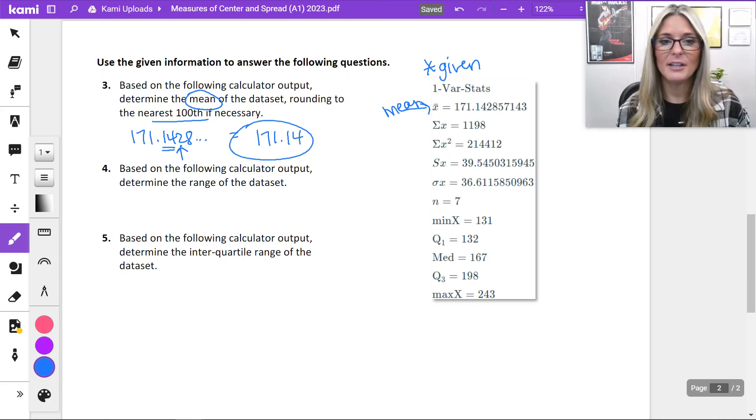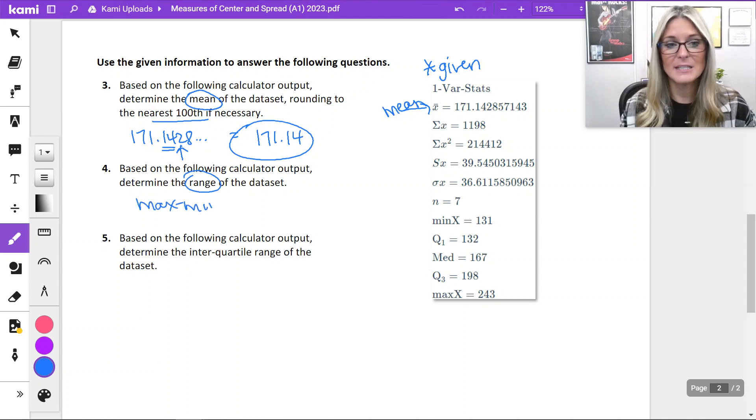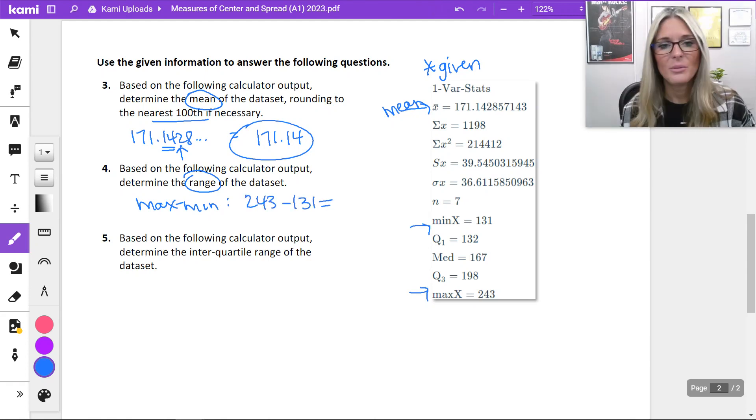Number four, based on the calculator output, determine the range. Remember, that's going to be maximum minus minimum. That specific value is not there on the calculator, but I can use our maximum and minimum to figure it out. 243 minus 131 will give me 112 as our range.